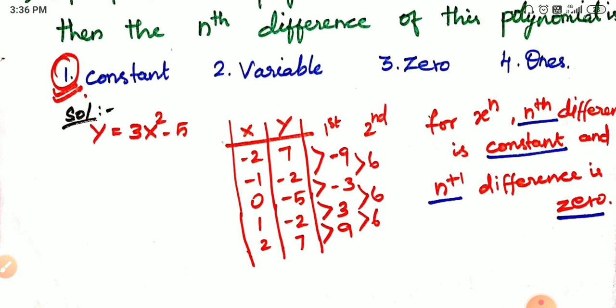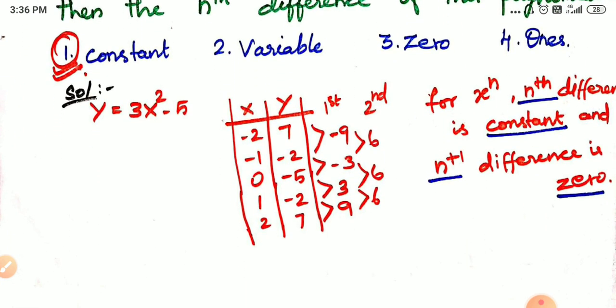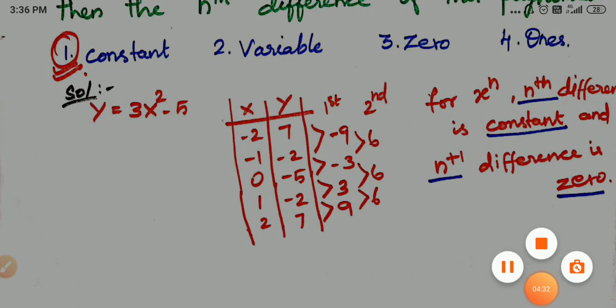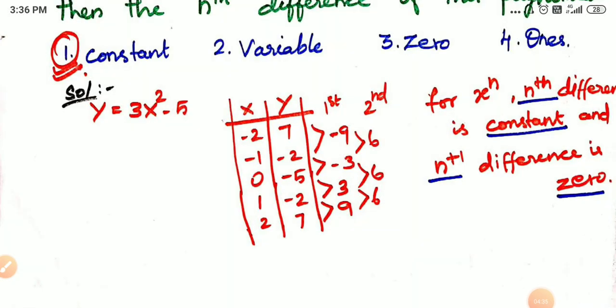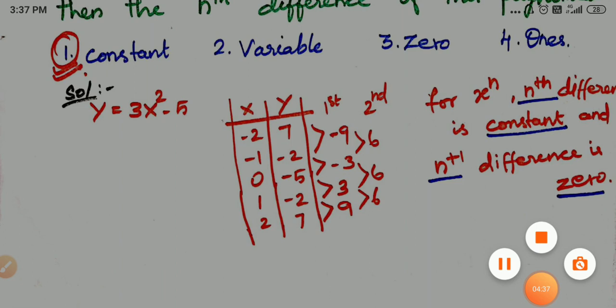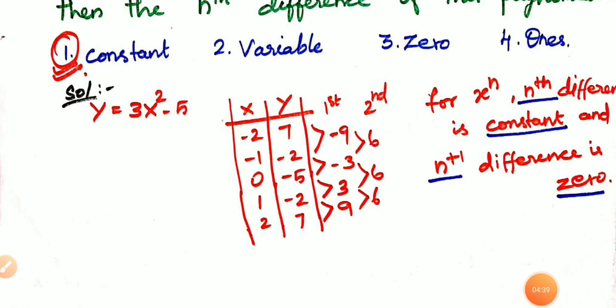For example, y is equal to 3x² minus 5. If we substitute x values here, y equals x. We have a function y = 3x² − 5. When x equals y, find the number. If we plug in the y value, we can see the difference.